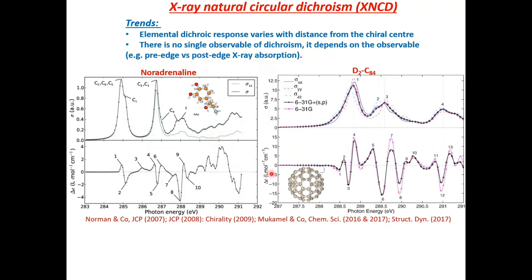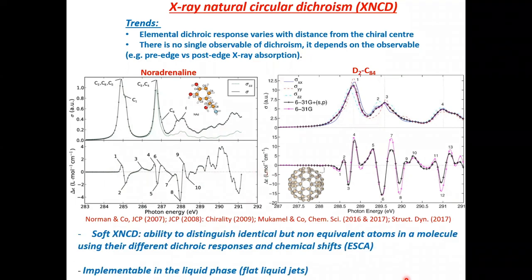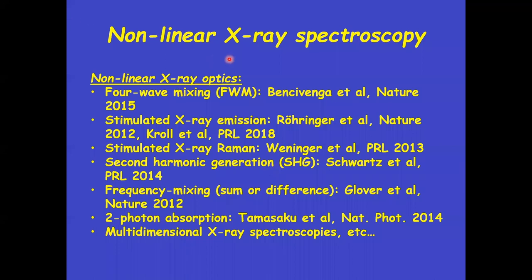This technique, soft x-ray natural circular dichroism, will allow you to distinguish identical but non-equivalent atoms in a molecule by combining both dichroic response and the chemical shift. Nowadays, this is feasible because we can have now flat liquid jets in vacuum so you can work in the soft x-ray regime without any problem. This is actually the core topic of my new proposal. And then there is a development of non-linear spectroscopy, identical to what happened after the advent of the laser in the 60s. I want to stress especially the second harmonic generation frequency mixing techniques because they are sensitive to interfaces. This way, you can be element selective during photocatalysis or catalysis and detect selectively which atom is doing what during the catalytic process.